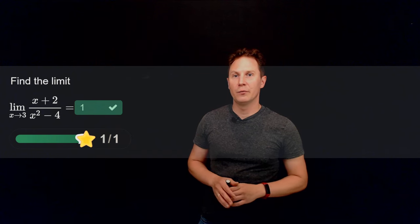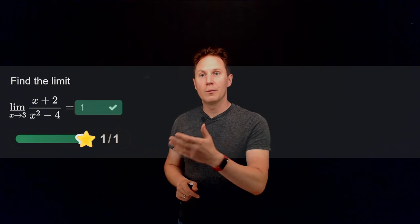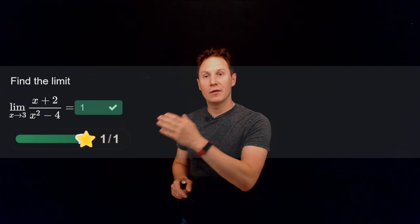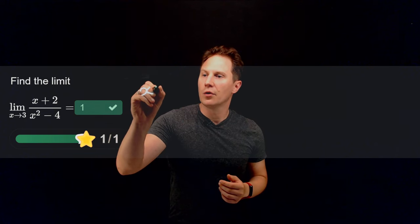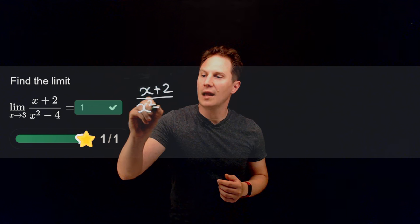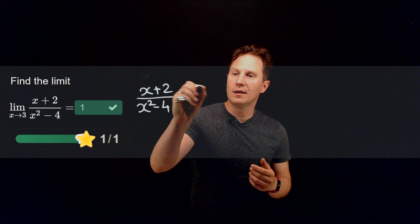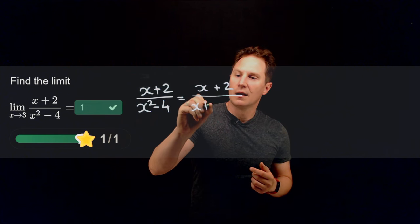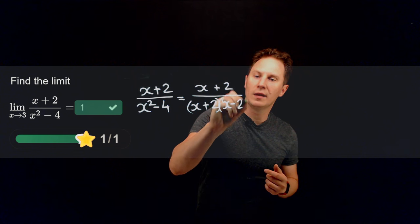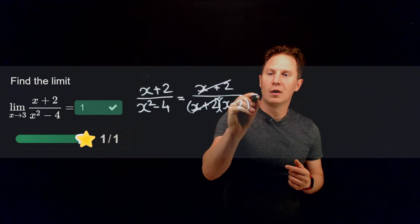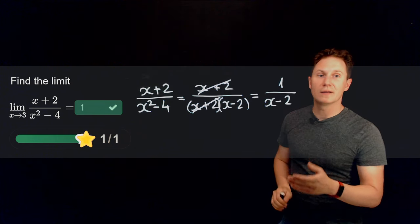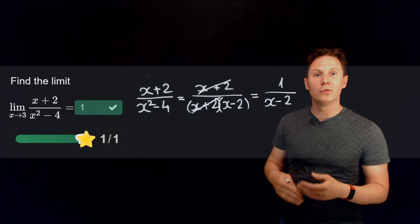Find the limit as x approaches 3 of (x + 2)/(x² - 4). Using the algebraic technique, factorize the denominator as a difference of squares: x² - 4 = (x + 2)(x - 2). Cancel the common factor of (x + 2), leaving 1/(x - 2). Evaluating at x = 3 gives 1/(3 - 2) = 1, so the limit is 1.